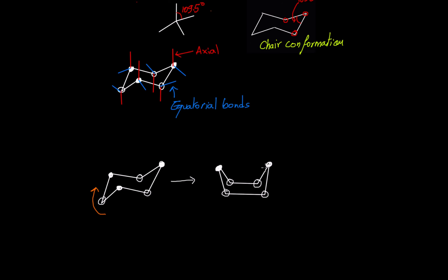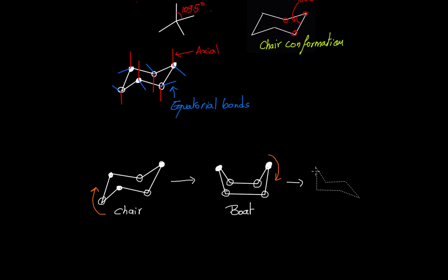This becomes an up carbon here. This is the chair and this is now what we call the boat. To continue the flipping, we'll flip this side — we'll take it down — and therefore we get the following chair conformation. Now we have an up carbon.